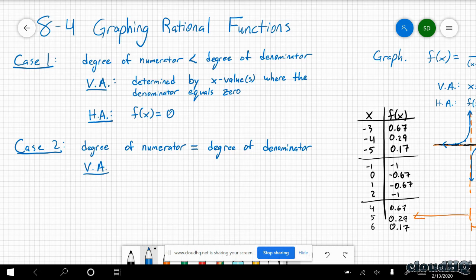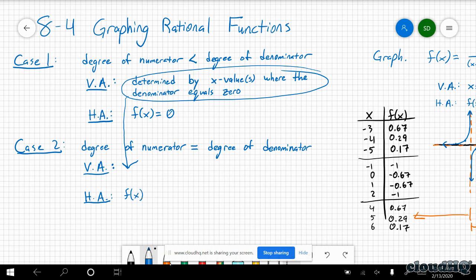So the other one is when the degree of the numerator equals the degree of the denominator. Vertical asymptote, it's the exact same. It's still determined by the denominator when the denominator equals zero. Your horizontal asymptote though is different. It's going to be a fraction this time. You're going to look at the lead coefficient of the numerator over the lead coefficient of the denominator.